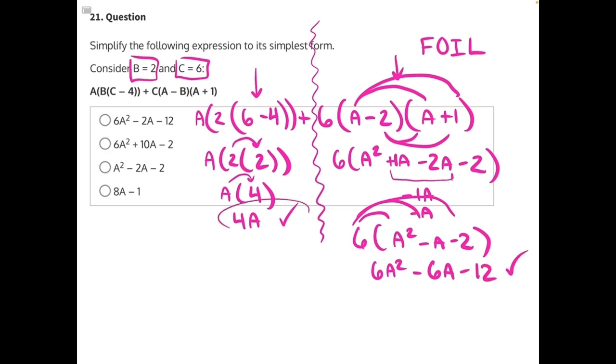And now we're done simplifying that side, and we can combine these two together. 6A squared minus 6A plus 4A, this is a positive 4A, minus 12.